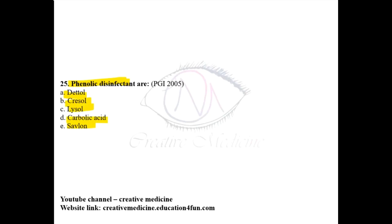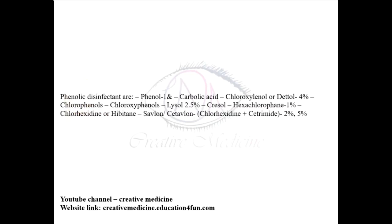We will see the list of phenolic disinfectants. Phenolic disinfectants include phenol, carbolic acid, chloroxylenol or Dettol, chlorophenols, chloroxyphenols, lysol 2.5%, crysol, hydroxy, hexachlorophene 1%, chlorhexidine, hibitane, savlon, and chlorhexidine with cetrimide 2% and 5%. All these are phenolic disinfectants.